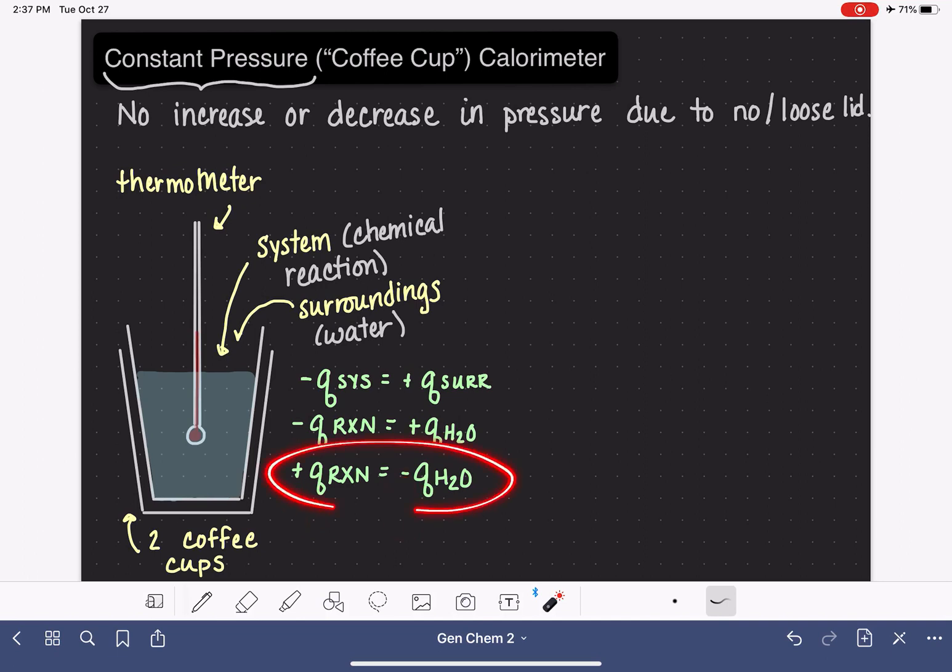Let's take this and turn this into equations that are going to be very useful for us. Let's talk in the context of the water, which are the surroundings for this particular calorimeter. For the water, we can say that the heat that is exchanged by the water, whether it's positive or negative, it doesn't really matter.